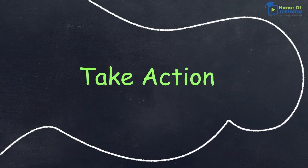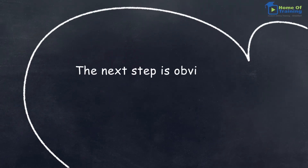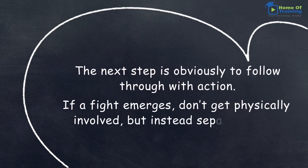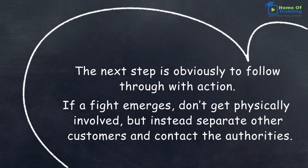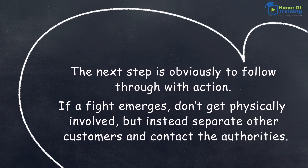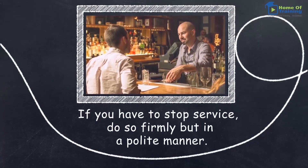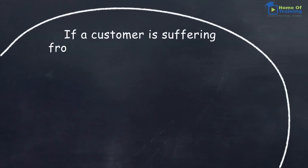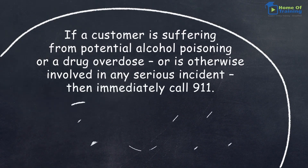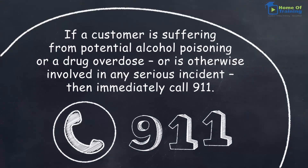Take action. Once everyone has a clear understanding of what they have to do, the next step is obviously to follow through with action. If a fight emerges, don't get physically involved, but instead separate other customers and contact the authorities. If you have to stop service, do so firmly but in a polite manner. If a customer is suffering from potential alcohol poisoning or a drug overdose, or is otherwise involved in any serious incident, then immediately call 911.